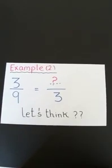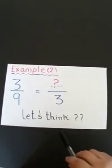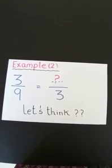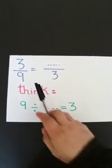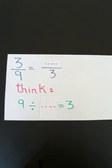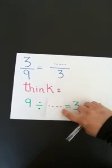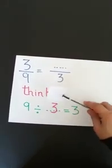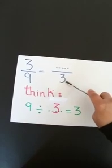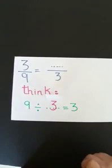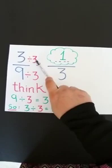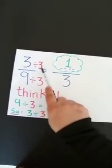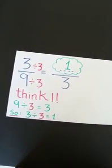The next example is 3 out of 9 equals what out of 3? Let us think. The 9 became 3. What happened to the 9 to become 3? Think with me: 9 divided by what equals 3? 9 divided by 3 equals 3. So, I divided the 9 by 3 to get 3 in the other equivalent fraction. So, what should I do on top? I should divide the numerator also by 3. So, 3 divided by 3 gives me 1. The missing number in the equivalent fraction will be 1.